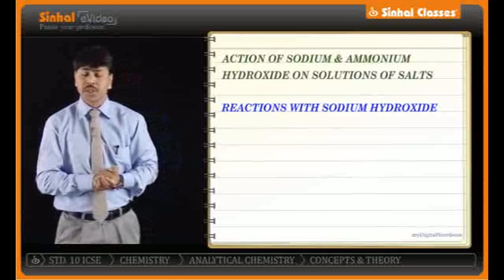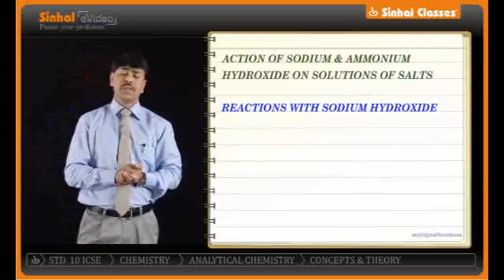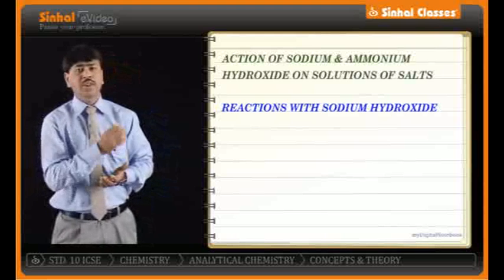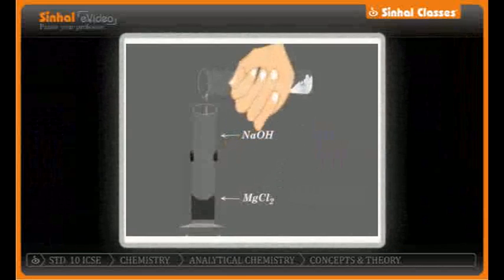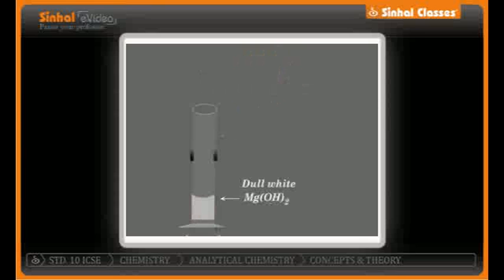Now let us consider certain salt solutions and see the effects of sodium hydroxide on them. For example, magnesium chloride treated with sodium hydroxide will give sodium chloride and magnesium hydroxide. Magnesium hydroxide is a precipitate — indicated by a downward arrow — and it forms a dull white precipitate which is insoluble in excess of sodium hydroxide.